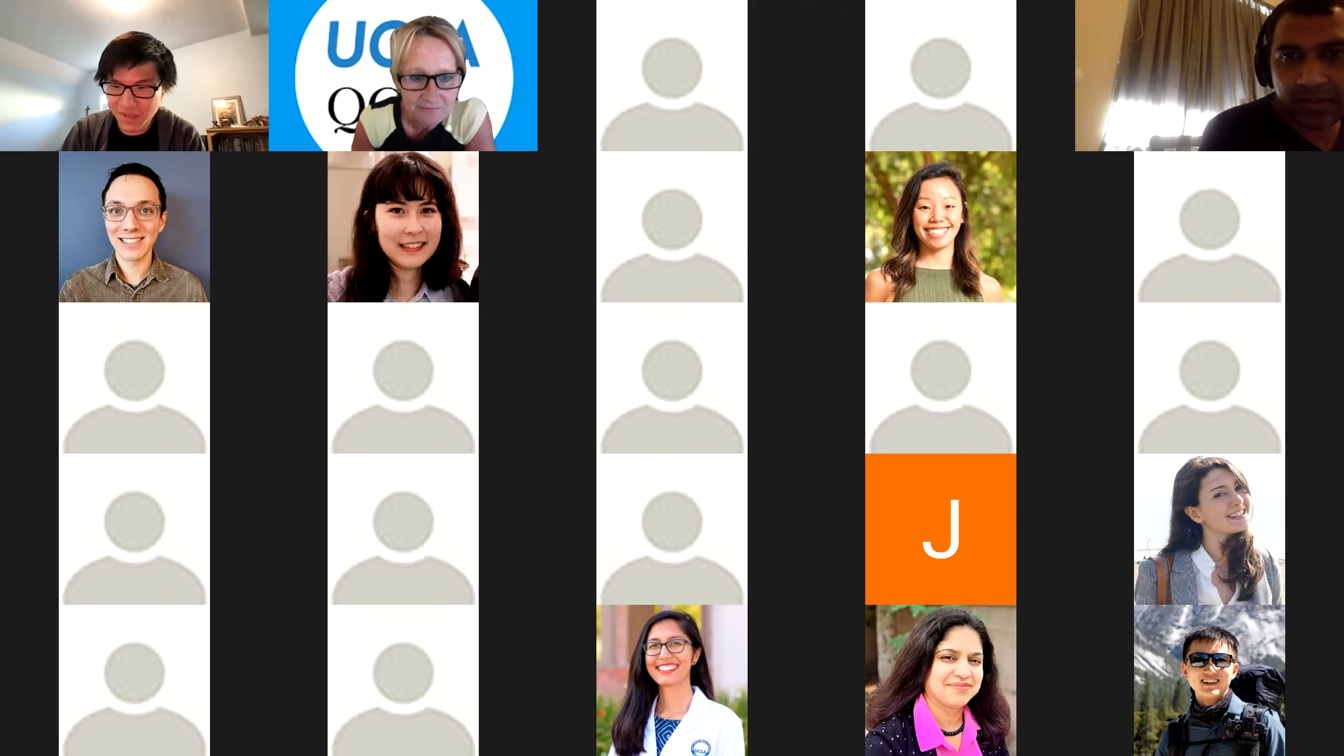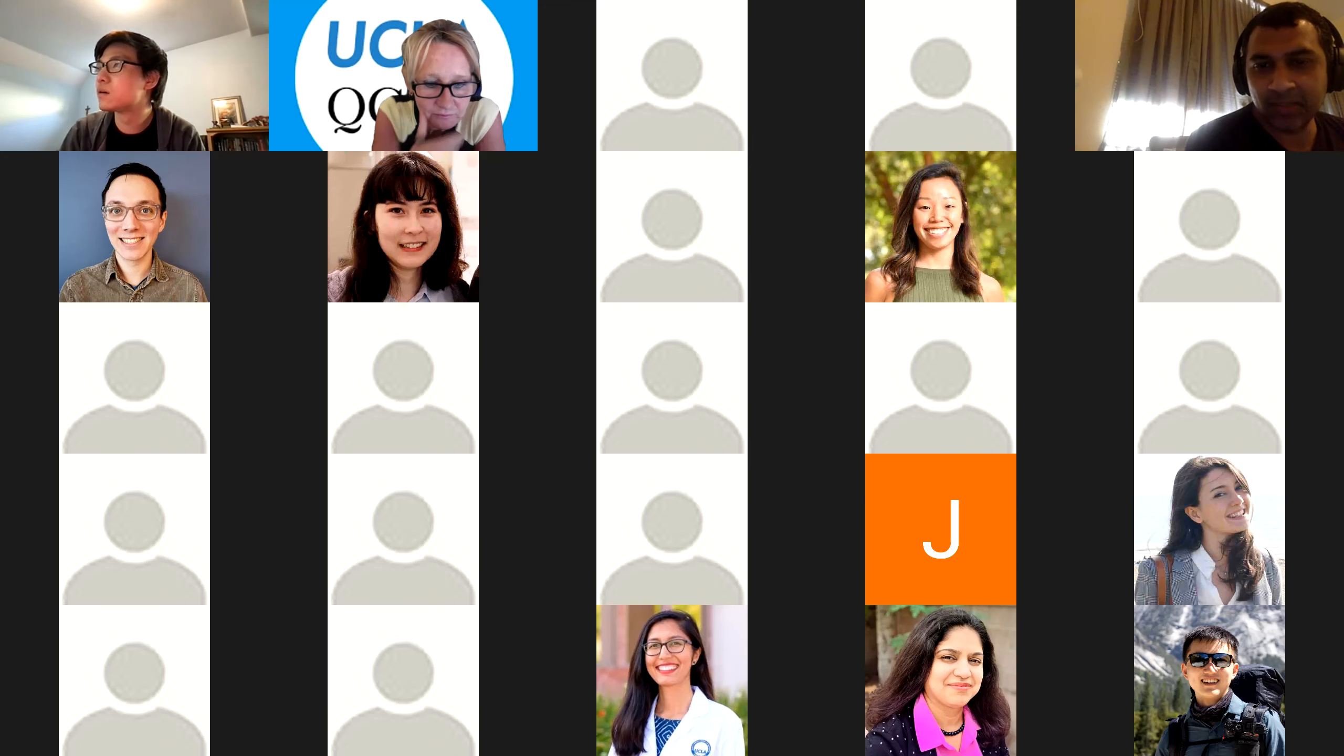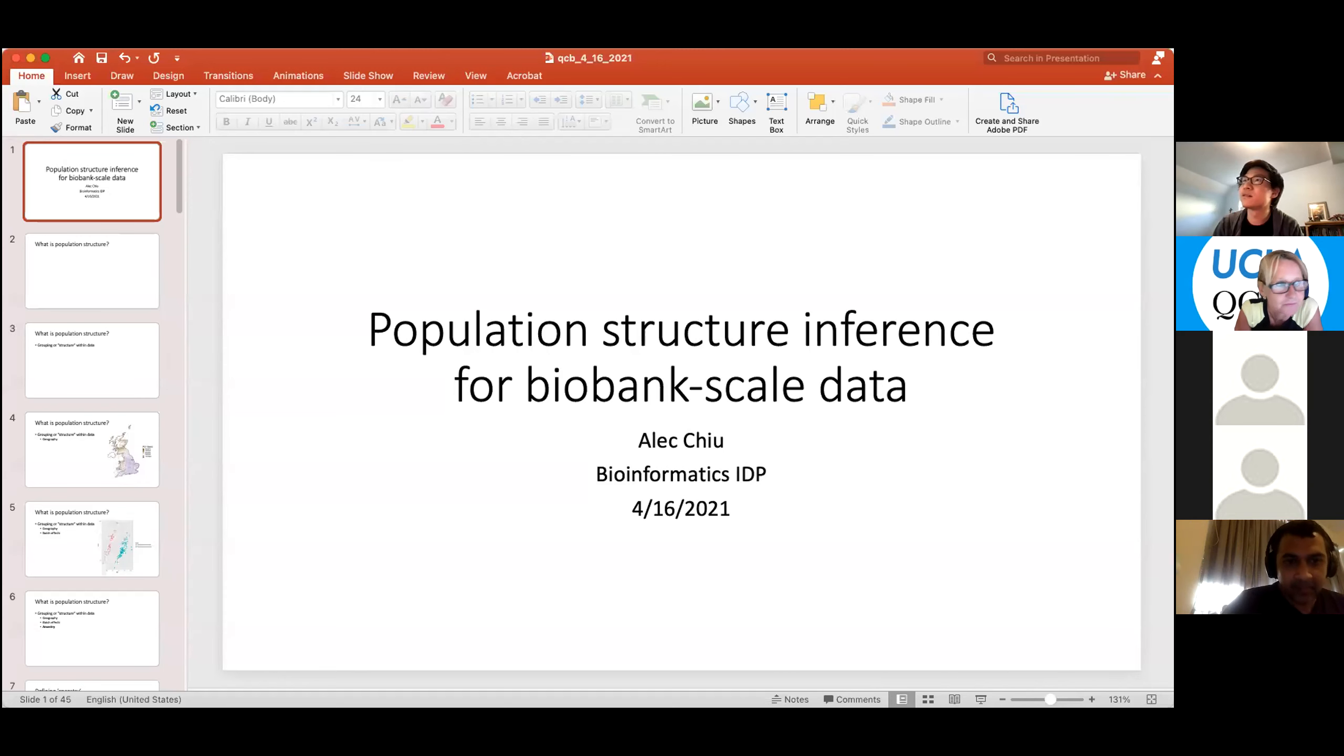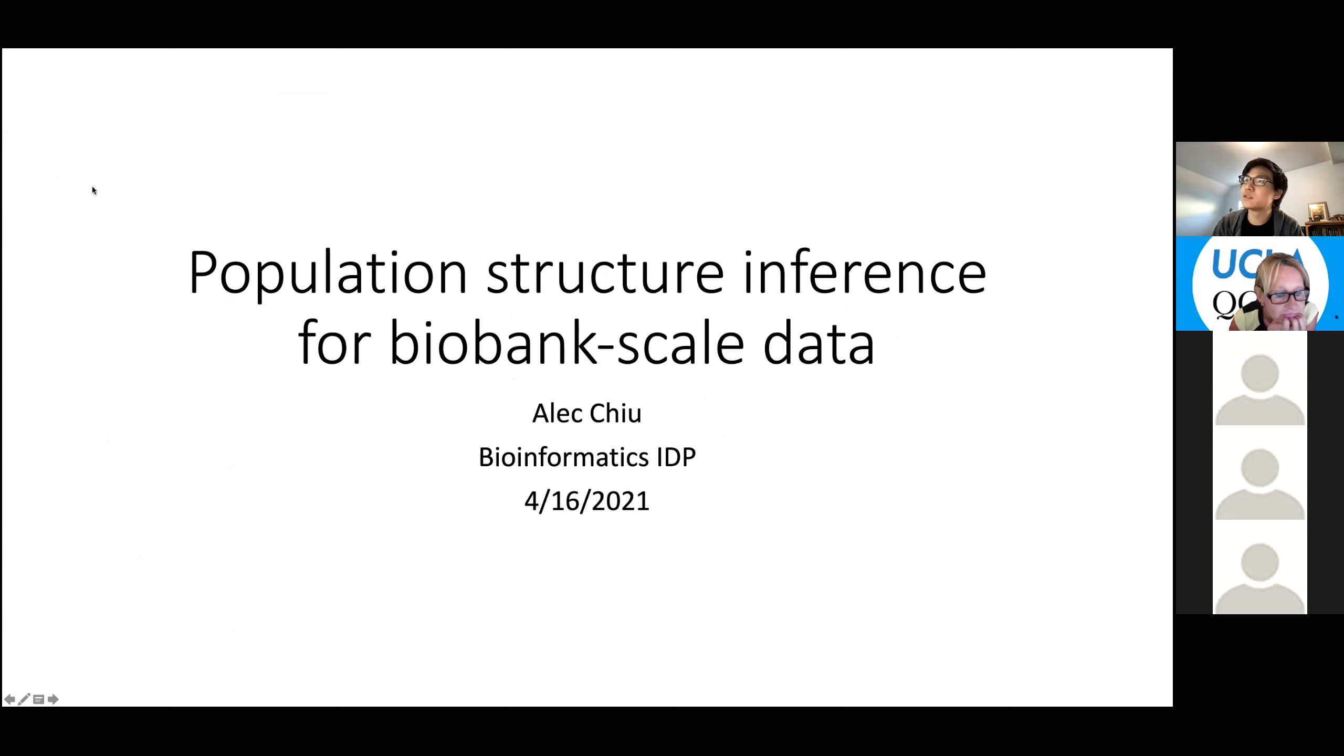It's my pleasure to introduce Alec Chiu, who is a bioinformatics PhD student. Alec has been thinking quite extensively about dimensionality reduction algorithms for genomic datasets. Thanks for the introduction. Today I'll be talking about inferring population structure for biobank scale data.